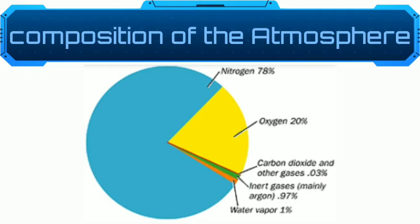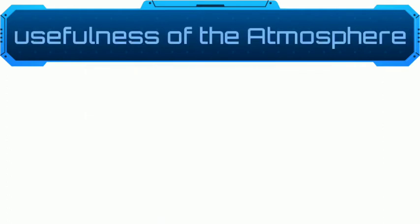All components of air are important to us. Oxygen is essential as all living beings breathe it in. Nitrogen helps in the growth of living organisms, especially plants. Carbon dioxide and water help plant growth, and rain and snowfall, which provide most of the water to plants, come from water vapors present in the lower layers of the atmosphere.